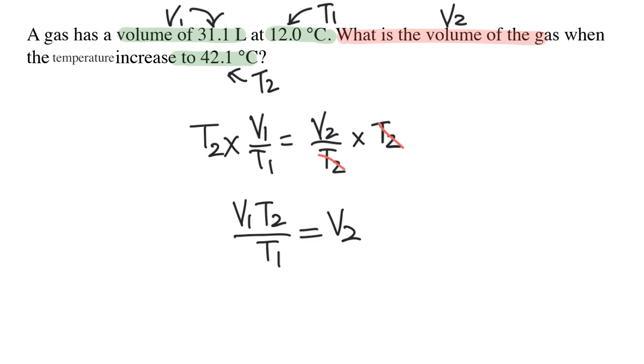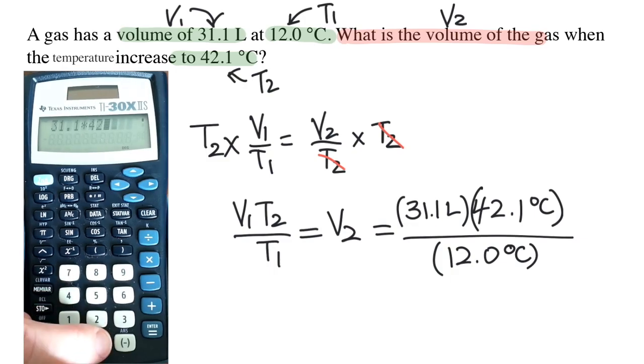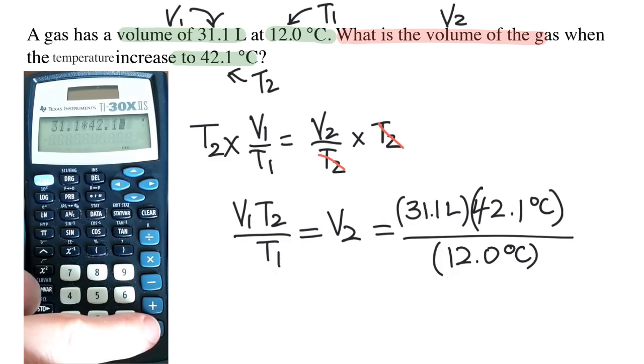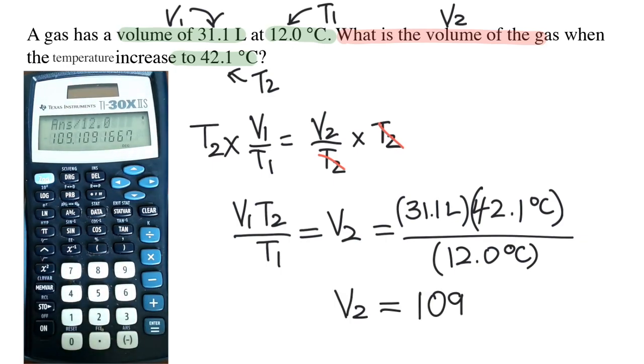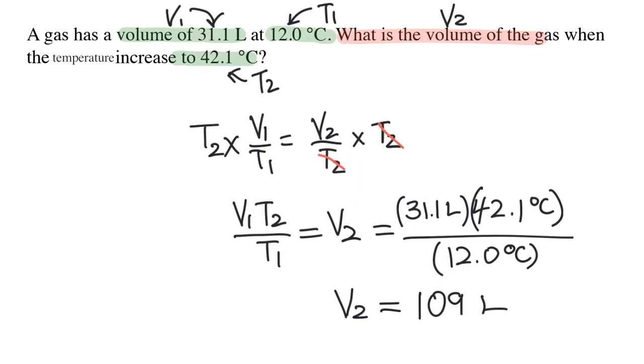Now I can plug in all the variables that I labeled in the question. V1 is 31.1 liters, T2 is 42.1 degrees Celsius, and T1 is 12.0 degrees Celsius. I'll plug all of this into my calculator. 31.1 times 42.1, and then I'll divide that by 12.0. I'm going to round my answer to three digits because each of the given variables had three significant digits. And so my answer is 109. And the unit is liters because liters is the unit for volume.